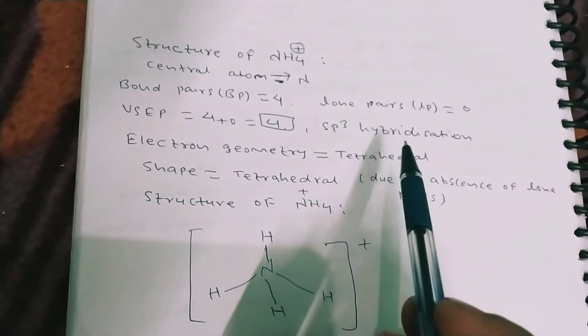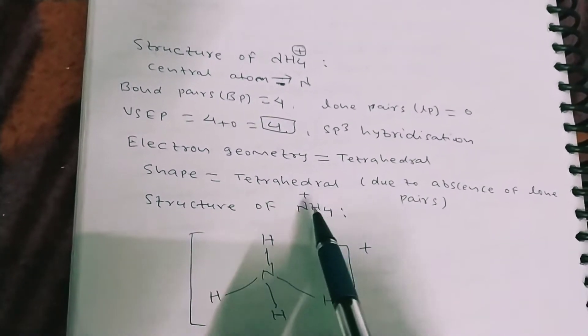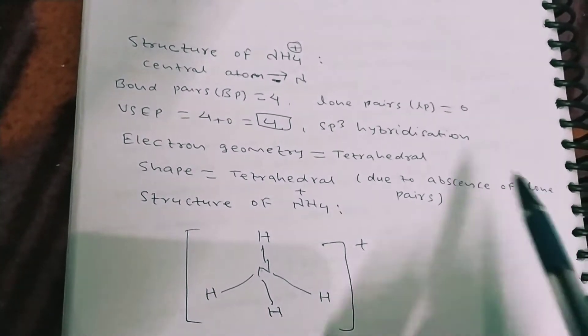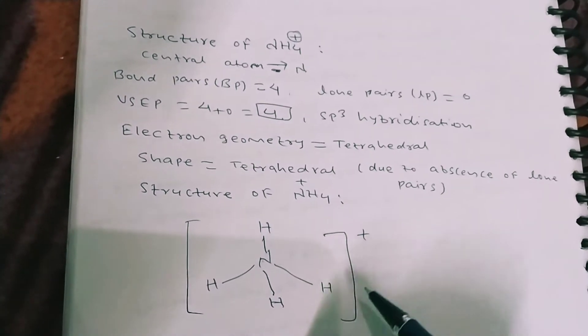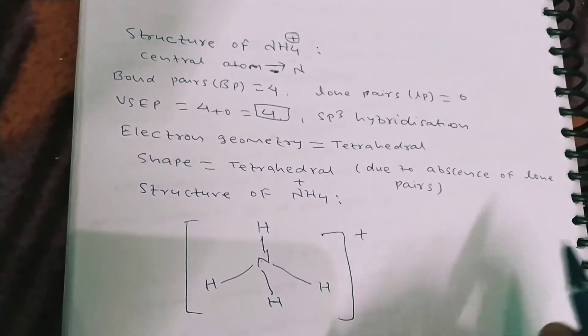because the hybridization is sp3, and the shape will also be tetrahedral because no lone pairs are present. Here is the structure of NH4+ which is ammonium ion.